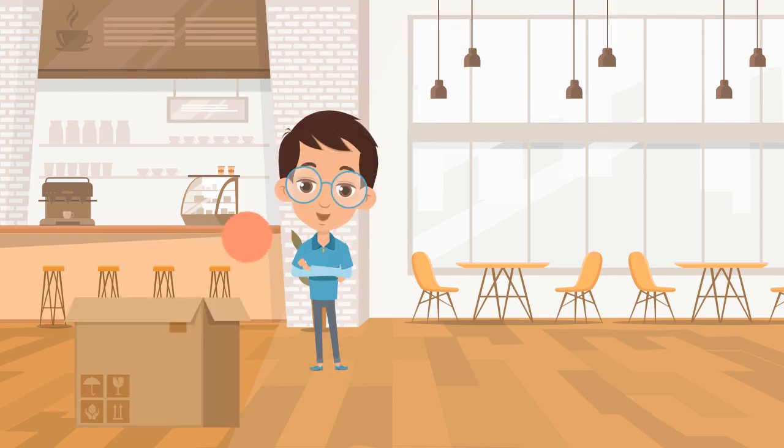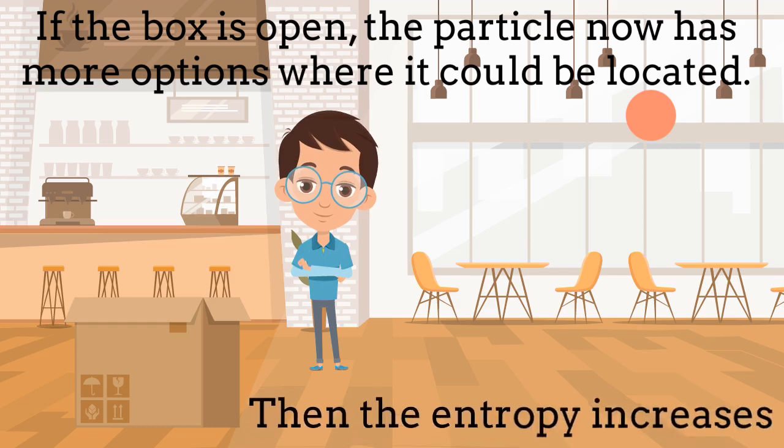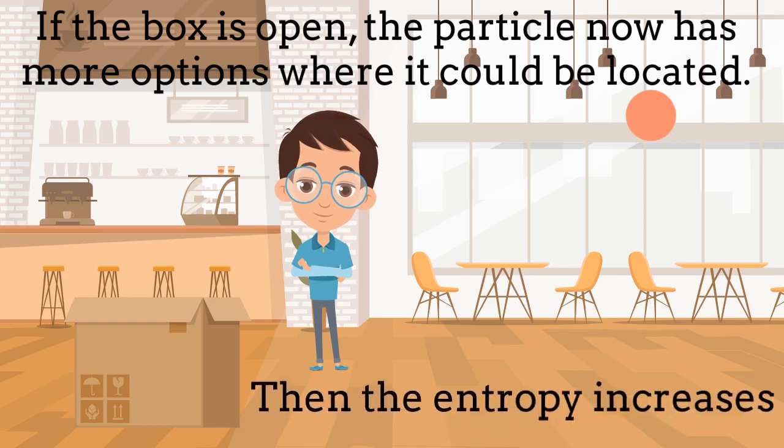The box is open, the particle has escaped. But if we are now in a similar situation but with an open box, in such a case the particle which was inside the box now can move freely throughout the whole room. The entropy increases because the number of possibilities where the particle could be also increases. This is a consequence of the second law of thermodynamics.